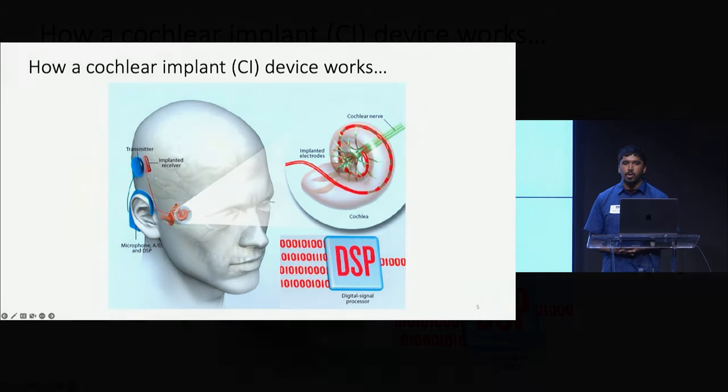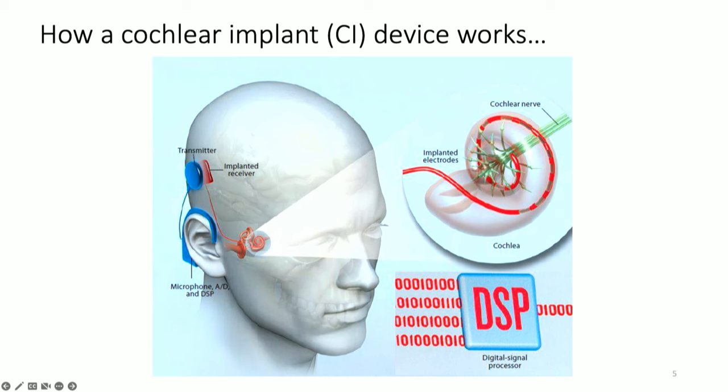Cochlear implant devices have been around for over 50 years now. Instead of amplifying sound like hearing aids, cochlear implants bypass acoustic transduction and stimulate the auditory nerve directly. Sound is first captured by the microphones on the behind-the-ear unit, or BTE sound processor. The sound is digitized and passed through various noise reduction stages, including beamforming, before it's transmitted as an FM radio signal to the internal implant, which generates a sequence of biphasic electrical pulses sent to the corresponding electrodes along the cochlea.